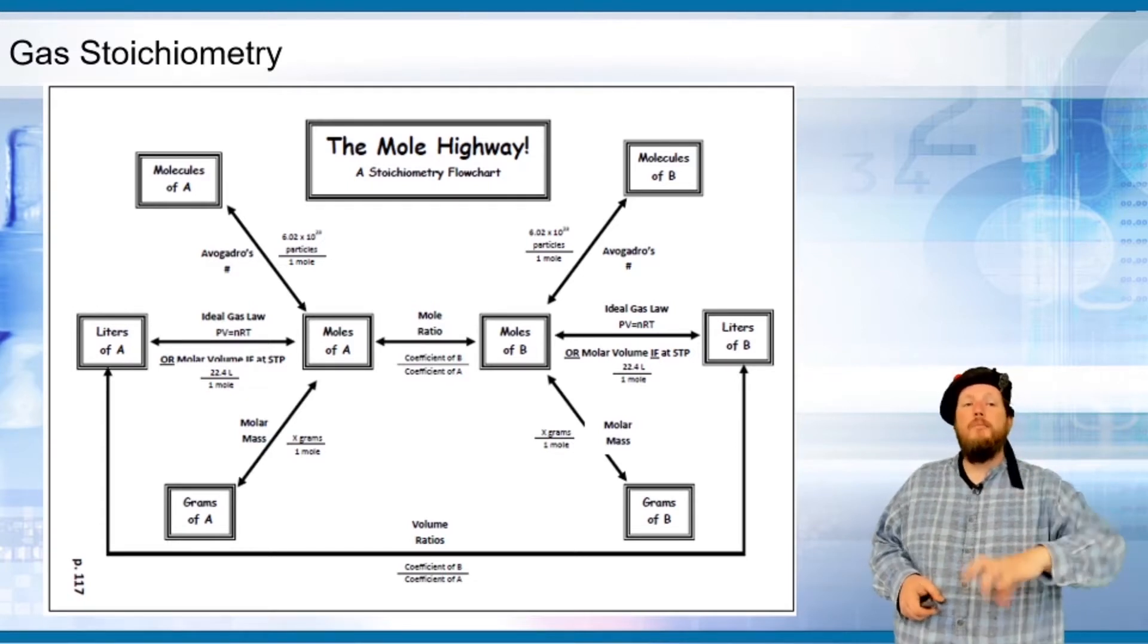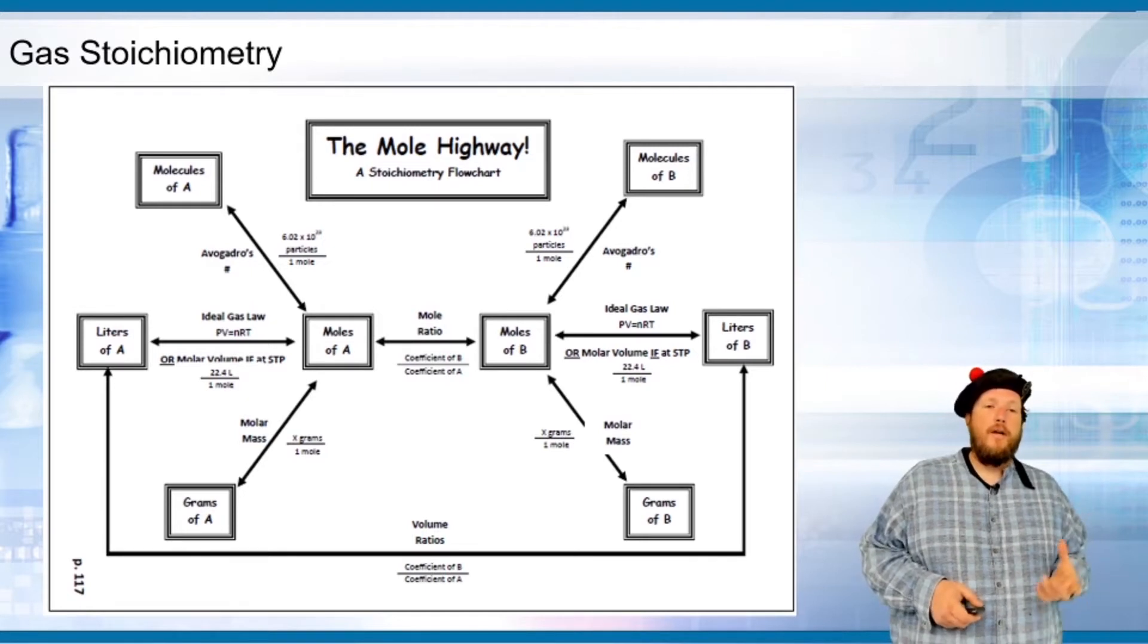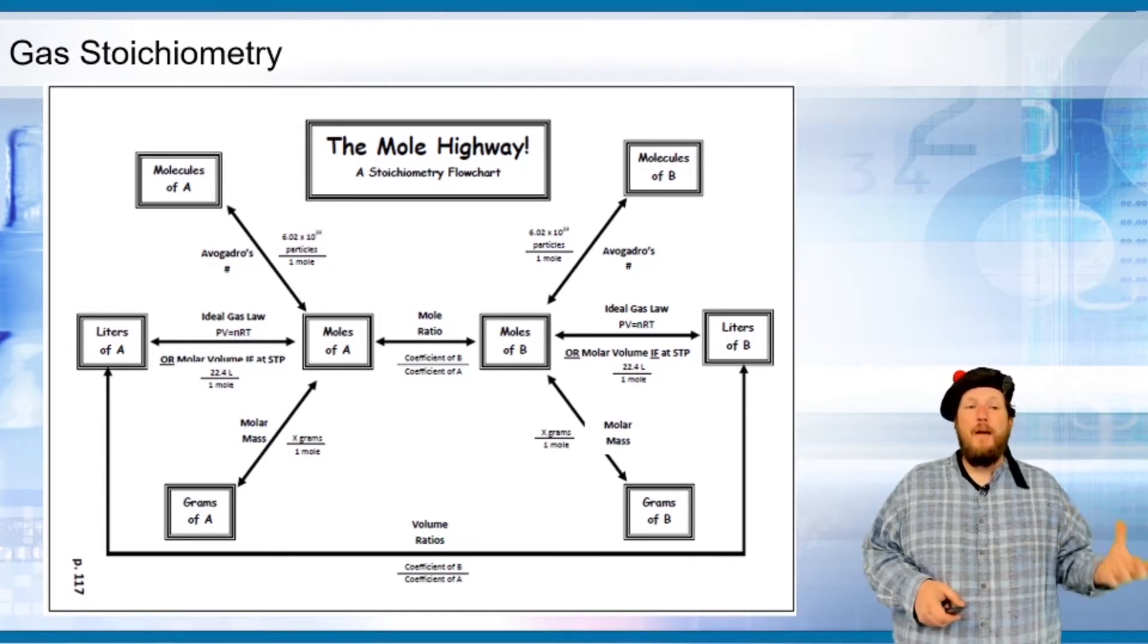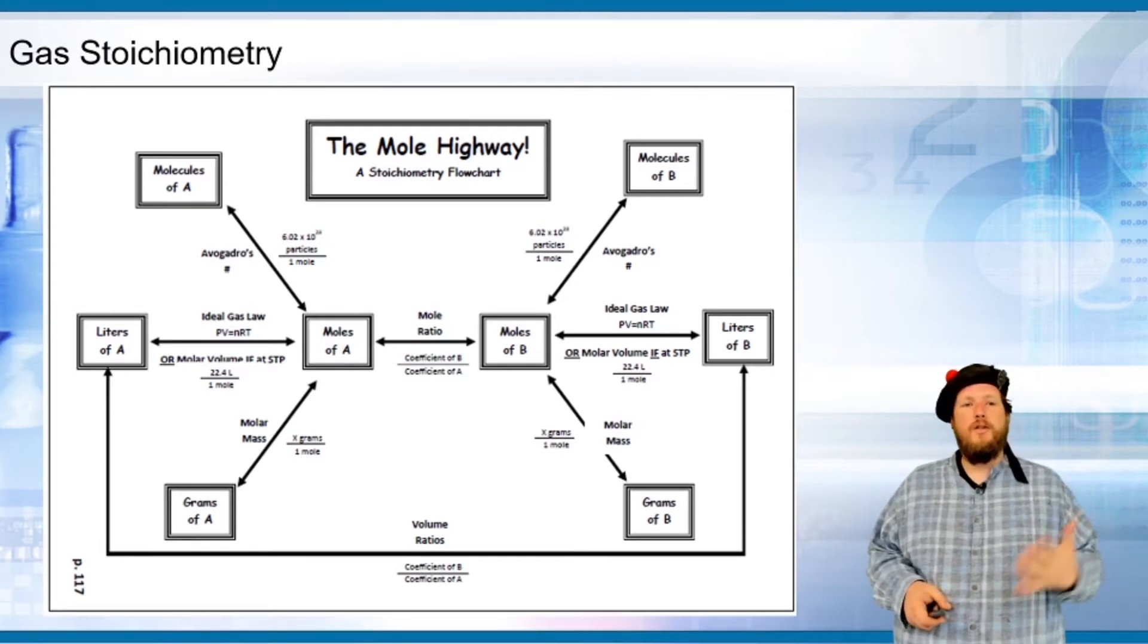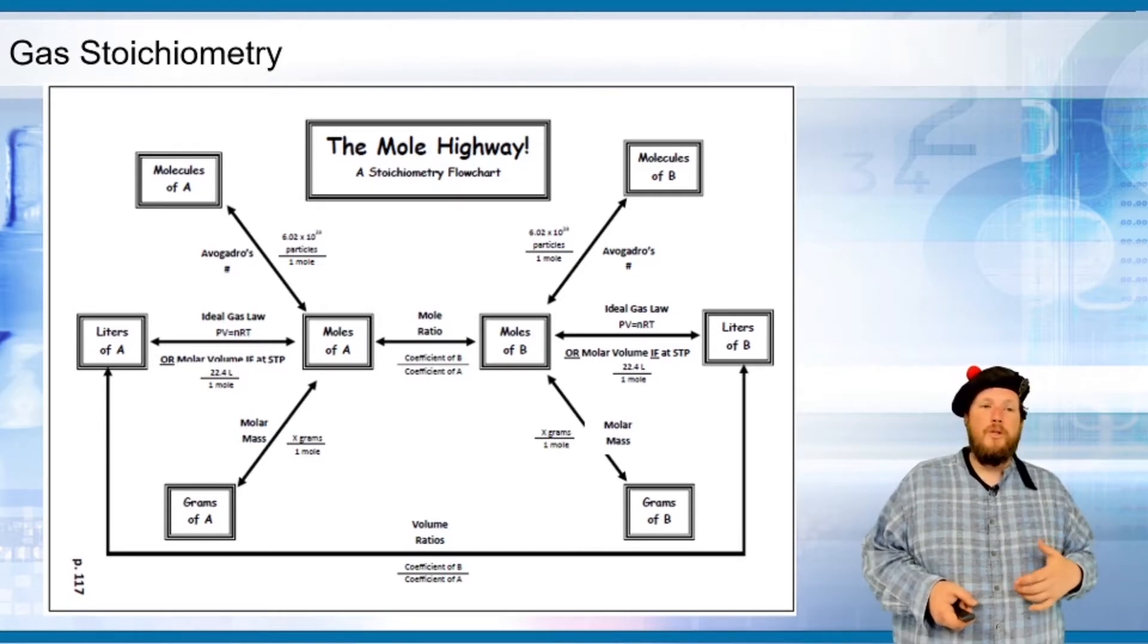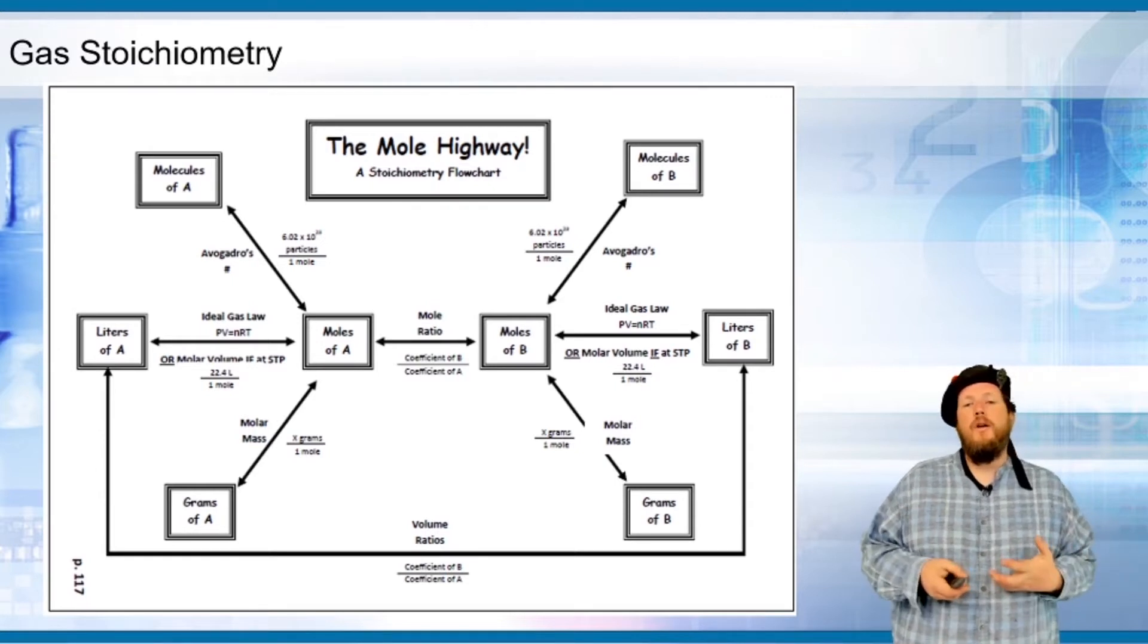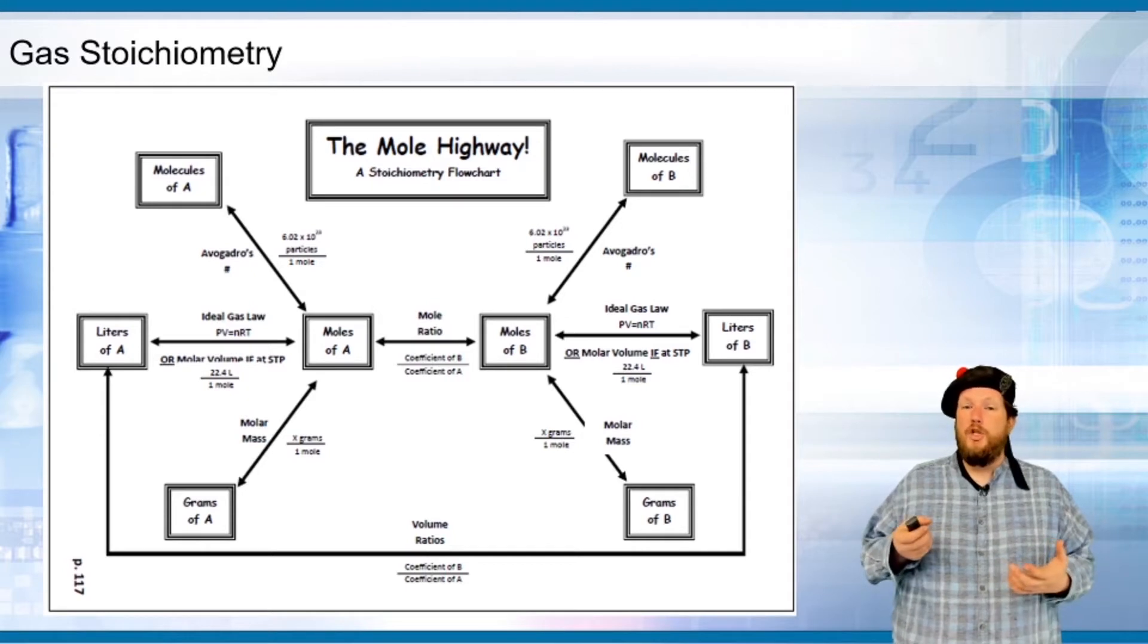You can go from liters to moles using the ideal gas law if you have the pressure, volume, and temperature. If you have the volume, you can use pressure, temperature, and the ideal gas constant to calculate moles. You can also go straight from liters to liters if the temperature and volume don't change.